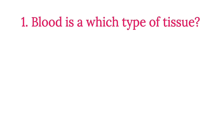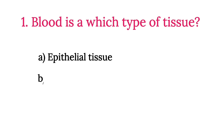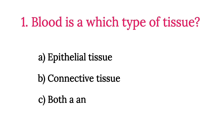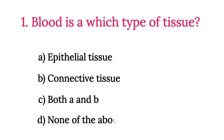MCQ Number 1: Blood is which type of tissue? Option A: Epithelial Tissue. Option B: Connective Tissue. Option C: Both A and B. Option D: None of the above. So the correct option is Option B, Connective Tissue.